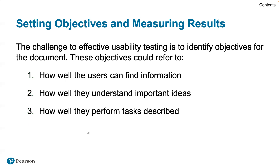Finally, we want to think about setting objectives and measuring results. The challenge to effective usability testing is to identify objectives for the document — these could refer to: one, how well users can find the information; two, how well they understand the important ideas conveyed; and three, how well they perform the tasks described. That's it for this chapter. Thank you very much.